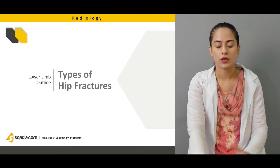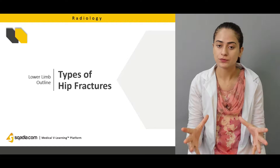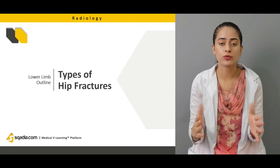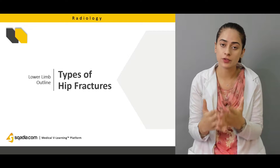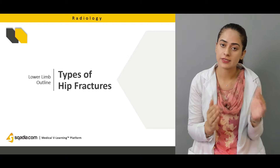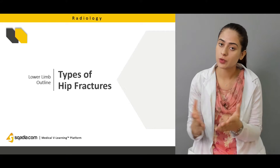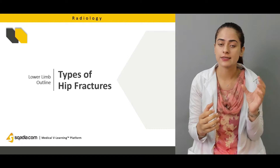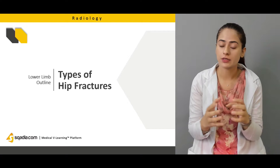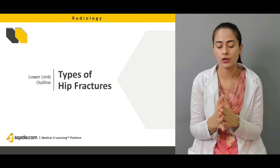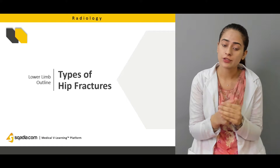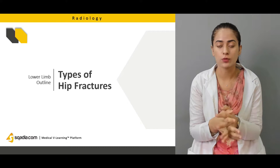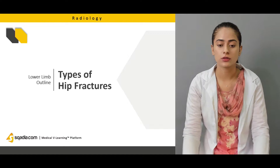Then we're going to talk about different hip fractures. The pelvis is made up of three bones, and the femur is the lower limb bone that attaches to the pelvis at the acetabulum. The femur head makes the hip joint with the acetabulum of the pelvis. We're going to cover fractures of the pelvis, and fractures of the femur — the neck and the shaft.